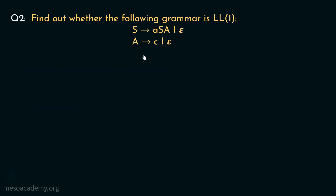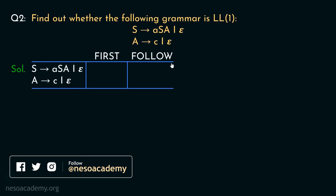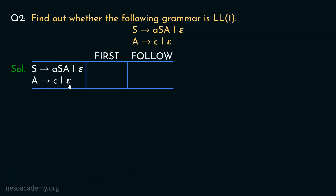Let's move on to the next question. We have to find out whether this grammar is LL1 or not. A has two production rules: A can be rewritten as small c, or it can generate epsilon — so in the first of A we include small c and epsilon. S also has two production rules: S can be rewritten as small a followed by capital S and capital A, or it can directly generate epsilon. Therefore, in the first of S we include small a and epsilon.